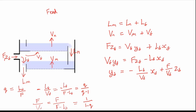Substituting these expressions in, we get the feed line equation: Y_F = q/(q−1)·X_F + 1/(1−q)·Z_F. We also know that this line must pass through the coordinates (Z_F, Z_F).